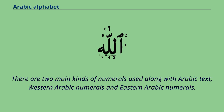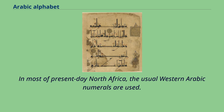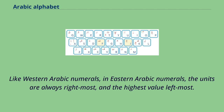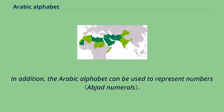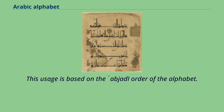There are two main kinds of numerals used along with Arabic text: Western Arabic numerals and Eastern Arabic numerals. In most of present-day North Africa, the usual Western Arabic numerals are used. Like Western Arabic numerals, in Eastern Arabic numerals, the units are always rightmost and the highest value leftmost. Eastern Arabic numbers are written from left to right. In addition, the Arabic alphabet can be used to represent numbers, based on the Abjad order of the alphabet.